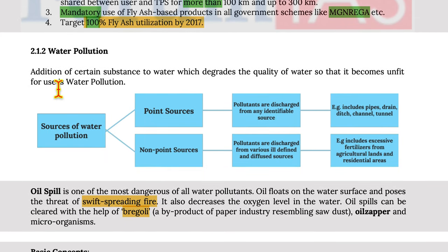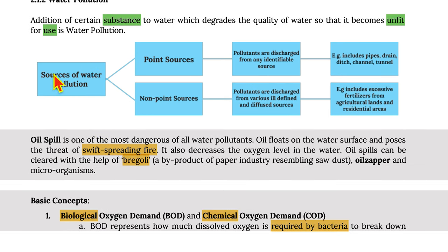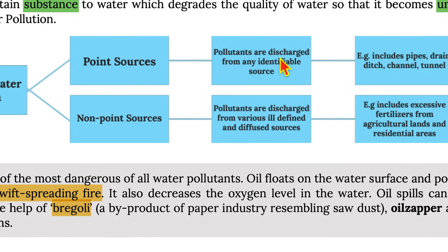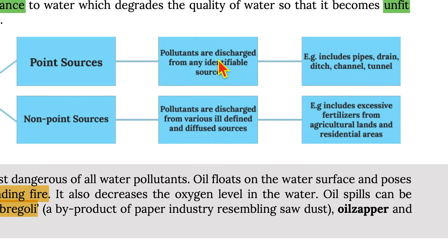Moving on to water pollution — the addition of certain substances to water which degrades its quality so that it becomes unfit for use is called water pollution. Sources include point sources, where pollutants are discharged from any identified source, and non-point sources, where pollutants are discharged from various ill-defined or diffused sources where one single point cannot be assigned.